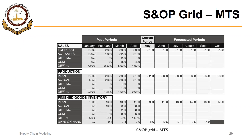Just as a recall, we are now focused primarily on the production part of the S&OP grid. This is related to production because we have already discussed in one of our modules how forecast is made, and we discussed different methods of forecasting and some calculations related to forecasting.